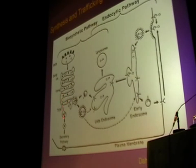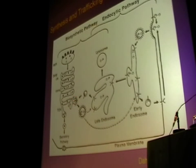They are sequestered from the normal secretory pathway by binding to the mannose-6-phosphate receptor, delivered by vesicular transport to the lysosome.